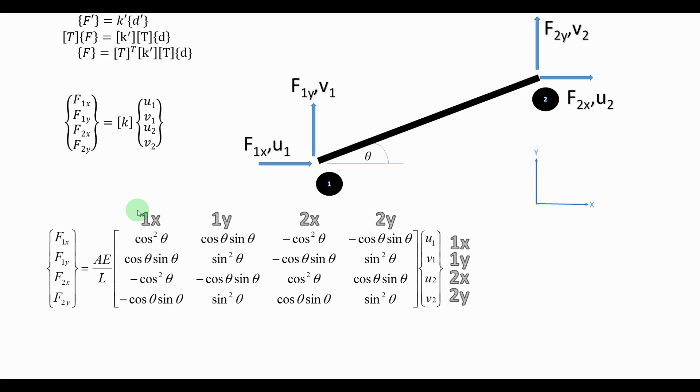And also this column accounts for 1X so it's F1X, this is F1Y or 1Y, 2X, 2Y and it's always symmetrical. If you want to check if your stiffness matrix is correct you can always check if it's symmetrical then you will have a good indication.